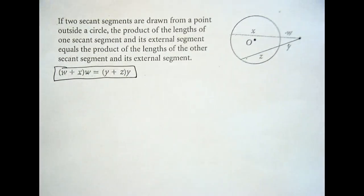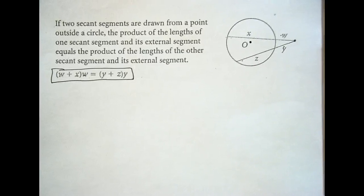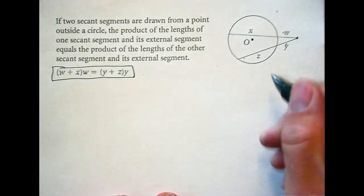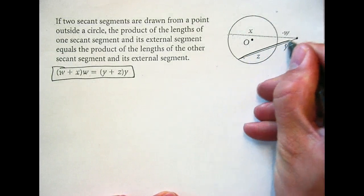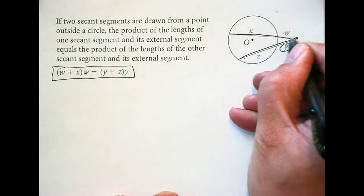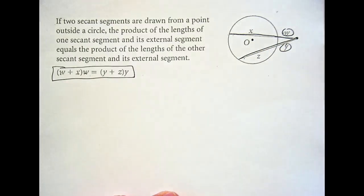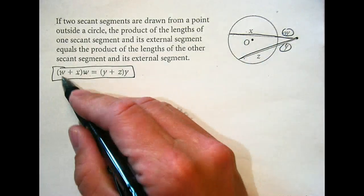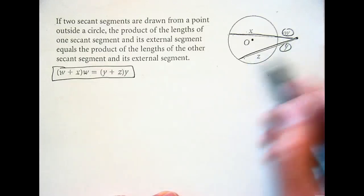You don't have to write all the words — write into your notes what makes sense to you. Is everyone clear that we're saying this whole length times that equals this whole length times that? So x plus w is that whole length, y plus z is that whole length, times the external segment.